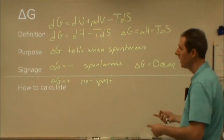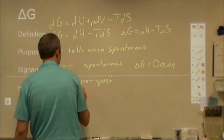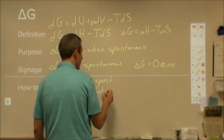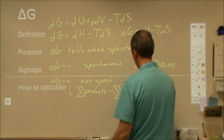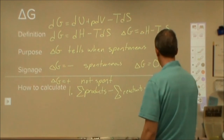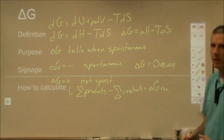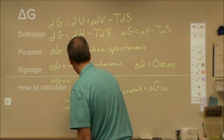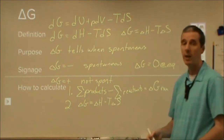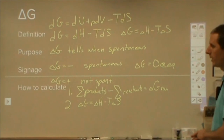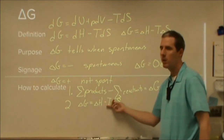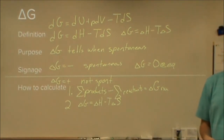To calculate Gibbs free energy, there are two methods. Method one: sum up all the Gibbs free energies of formation for the products, subtract the sum for all reactants, and the difference is the change in Gibbs free energy for the reaction. Method two: use the equation delta G equals delta H minus T delta S, if you know the enthalpy change, entropy change, and temperature. Importantly, this second method can use actual numbers or just signage — that's a really important distinction.